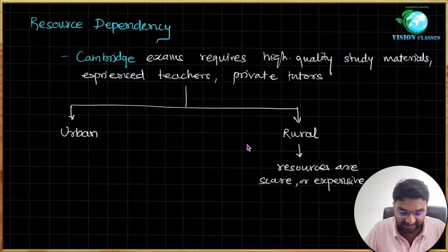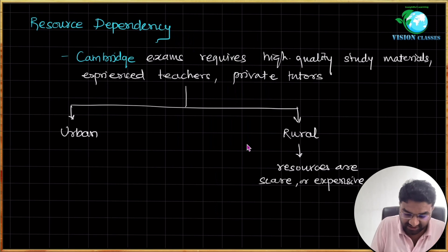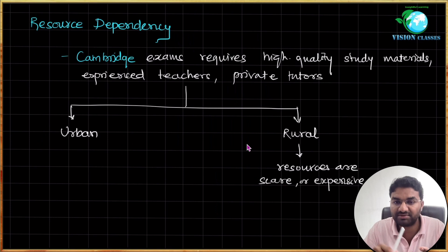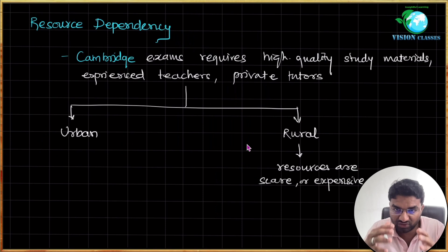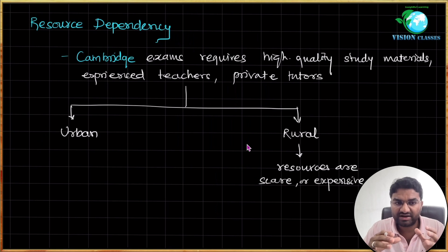Last but not least is resource dependency. Cambridge exams require high-quality standardized materials and teachers, including private tutors. Here we see an urban-rural divide: in urban regions, resources, teachers, and private tutors are available along with online connectivity, but in rural regions — even where some Cambridge schools exist — there is a lack of quality teachers, a lack of resources, and some resources are too expensive locally.